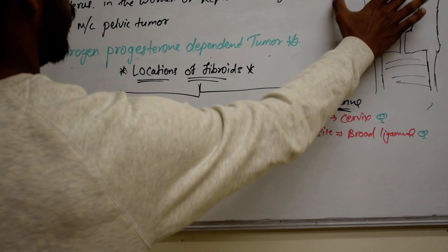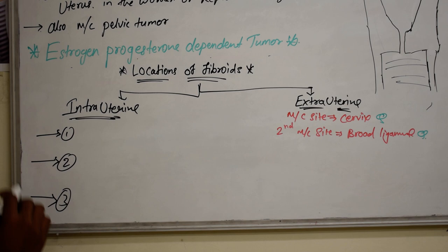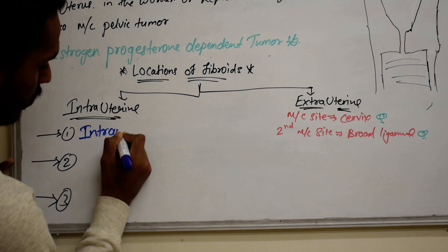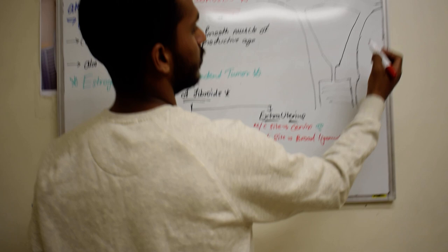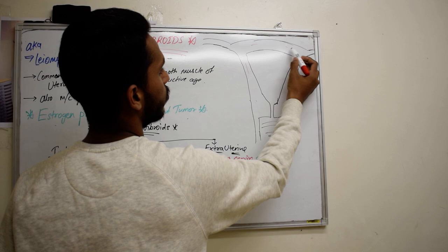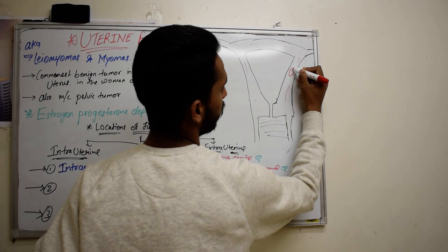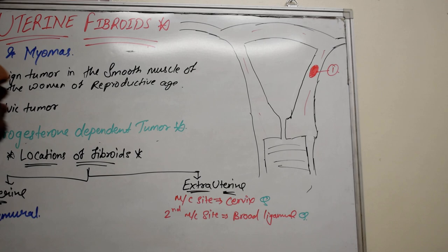Now let's talk about intrauterine fibroids. The first type is the intramural type. This means the fibroid is located inside the muscle of the uterus.